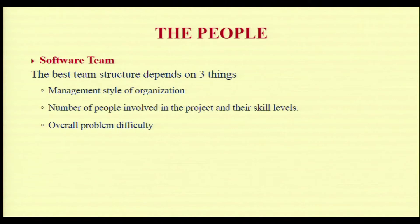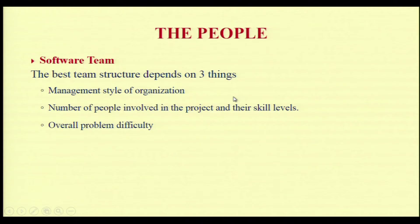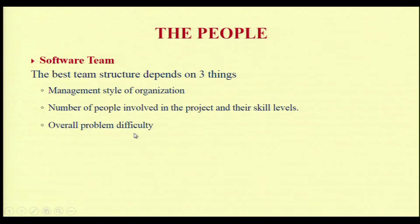The best software team structure depends on three things: the management style of the organization — whether top-down, bottom-up, people-centric, or sandwich type; the number of people involved and their skill levels; and the overall problem difficulty. Skill sets of appropriate people are very much essential in software development, and the level of difficulty practitioners encounter must be assessed properly.